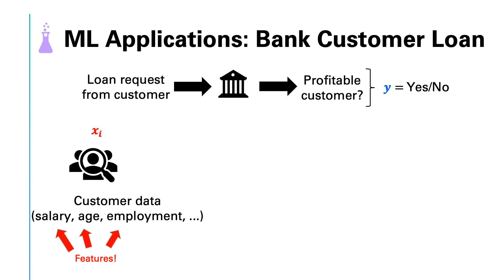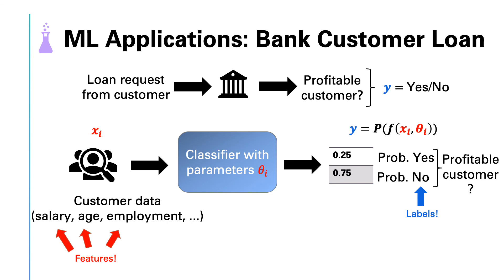Here, it is very reasonable to assume that there is a pattern. Given some data about the customers, we should be able to provide some guess about the output, that is, the profitability of the customer. However, this relationship is not obvious. You cannot simply write a mathematical equation for this. So this is where machine learning could be potentially useful. The next step is to obtain training data.